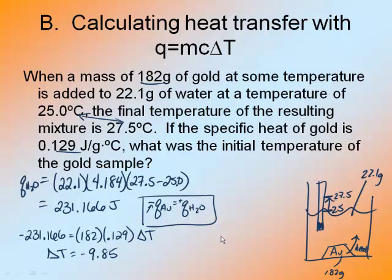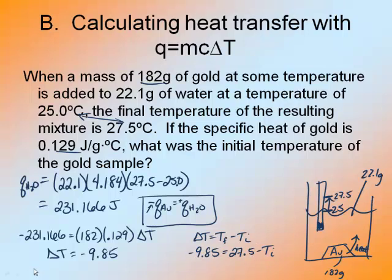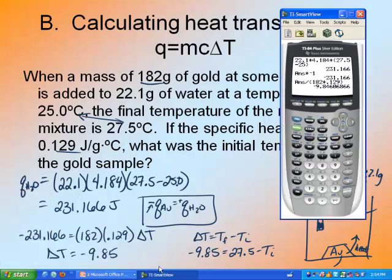Now I know that delta T is equal to T final minus T initial. My delta T is negative 9.85. My final was 27.5, and now I just have to solve for T initial. And I say okay, 27.5 plus 9.85, and the answer is 37.35.